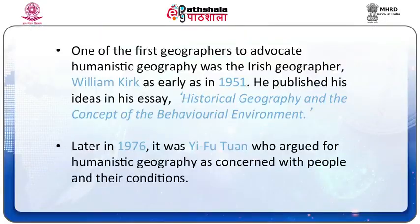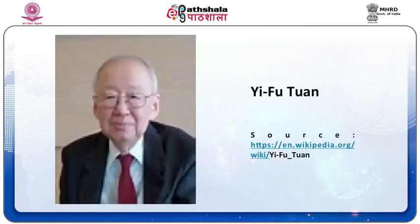One of the first geographers to advocate humanistic geography was the Irish geographer William Kirk as early as 1951, who published his ideas in the essay 'Historical Geography and the Concept of Behavioral Environment.' But the time was not appropriate since geography was greatly inspired by the positivist tradition. Later in 1976, it was Yi-Fu Tuan who argued for humanistic geography as concerned with people and their conditions. He opined that humanistic geography sought to achieve an understanding of the world through insight into the human-nature relationship and the geographical behavior of humankind, as well as their perception about space and place.